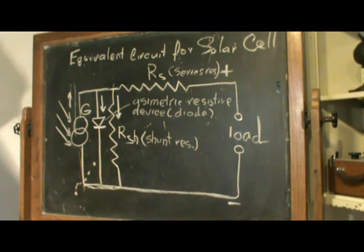This is the equivalent circuit for a solar cell. It consists of a constant current source. I used to call it generator,